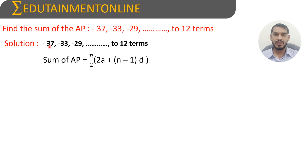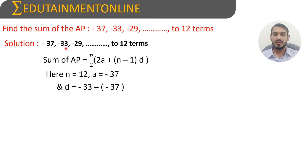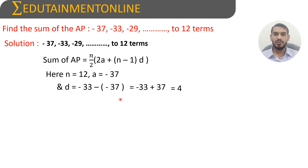We have a = -37, n = 12, and the common difference d = (-33) - (-37) = -33 + 37 = 4. Therefore the common difference is 4.